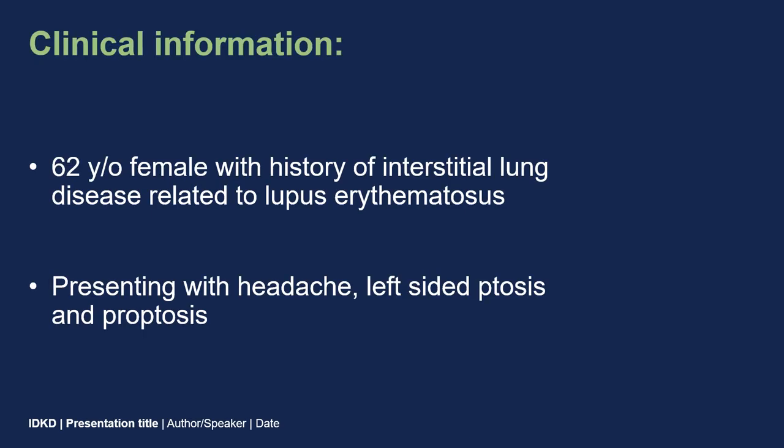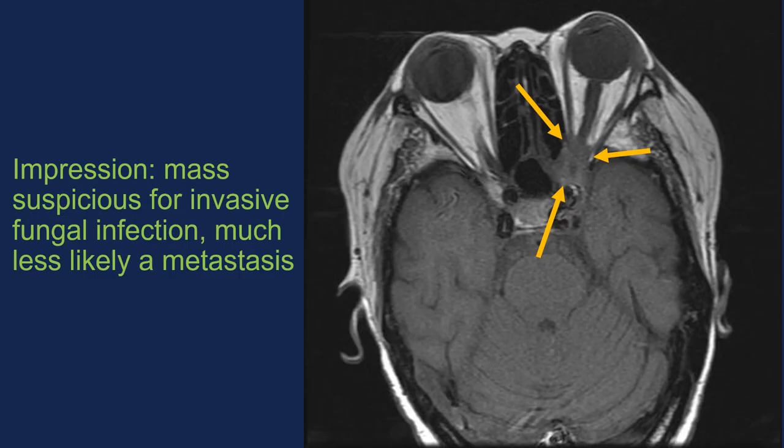This is a 62-year-old female with a history of interstitial lung disease related to lupus erythematosus. She was acutely presenting with headache, left-sided ptosis, and proptosis. She had an MRI of the brain and orbits demonstrating a retroorbital mass, which was described by a neuroradiologist as suspicious for an invasive fungal infection such as aspergillus, and much less likely to be other etiologies such as a metastasis.